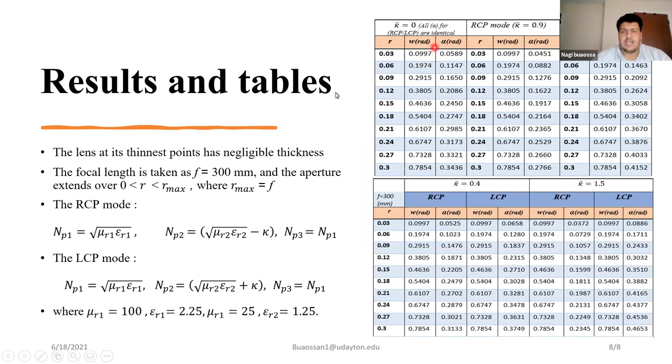One case studies when the losses equal zero. When we put kappa equal zero, RCP and LCP are identical. But when we change the value of kappa, we find there is a difference between RCP and LCP by assuming the focal length is constant to study the behavior of the angles.